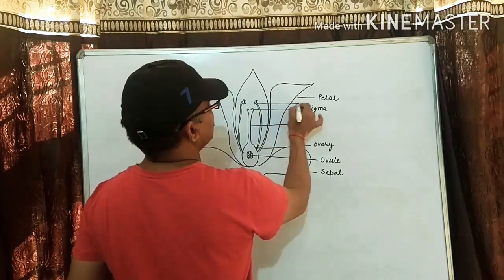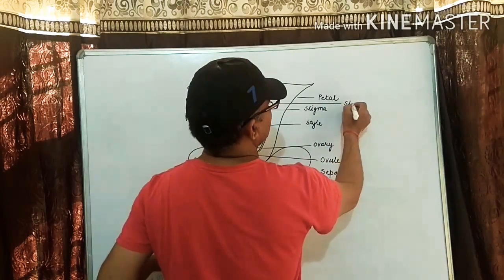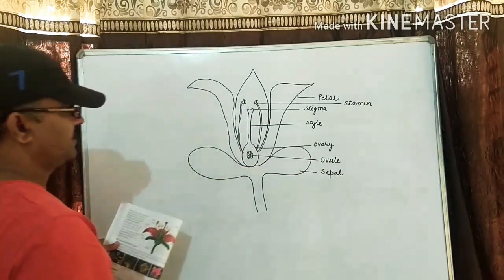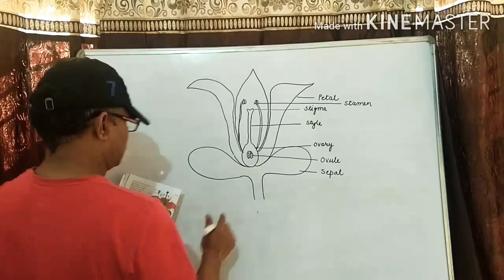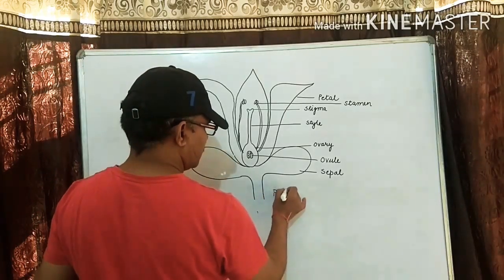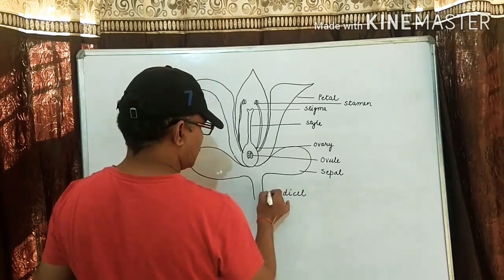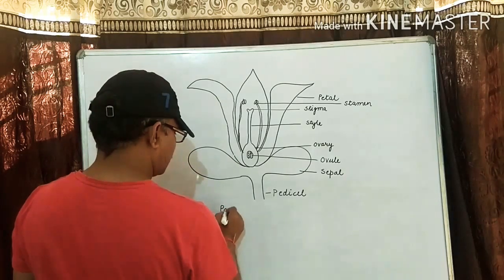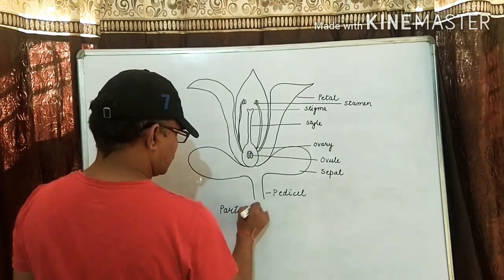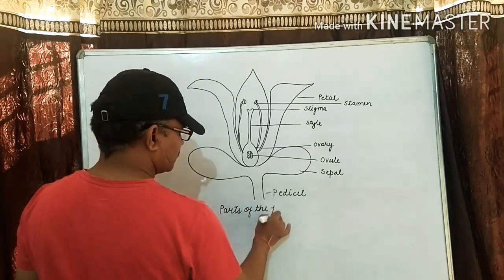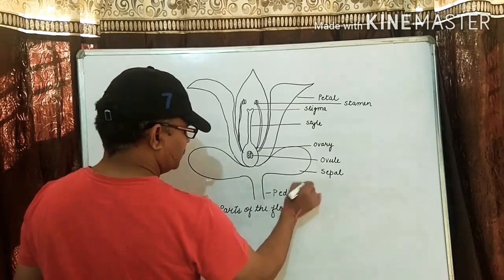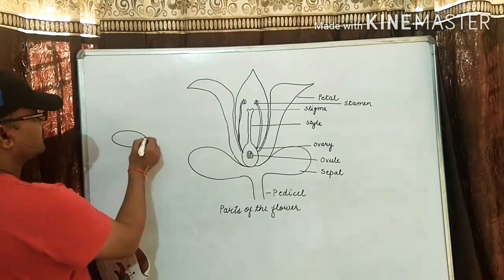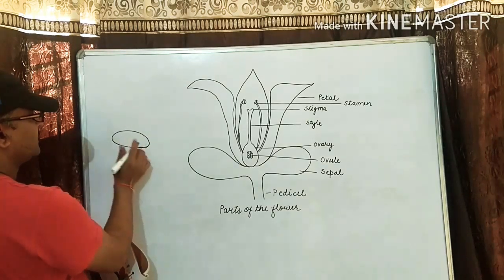And here, stamen. Anything left? Nothing. This is petal. And this is the colored part of the flower.